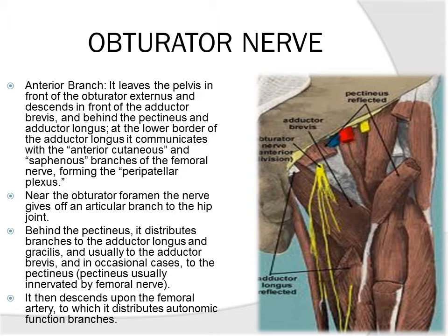Recall that the pectineus is usually innervated by the femoral nerve — a convention that the AMA guides adopts, and I'll point that out when we get to some diagrams. The obturator nerve then descends on the femoral artery and provides autonomic motor supply to the femoral artery — specifically to control the diameter of the femoral artery through its action on the smooth muscle found there.